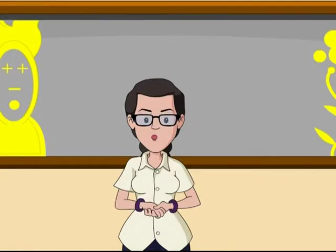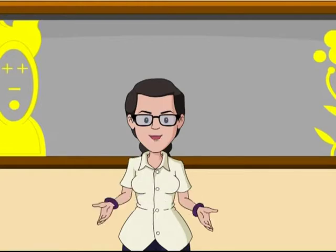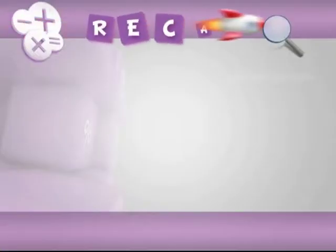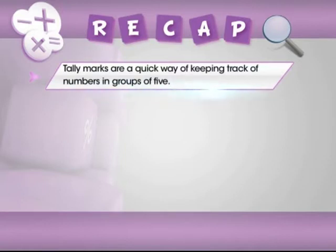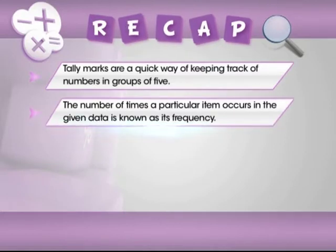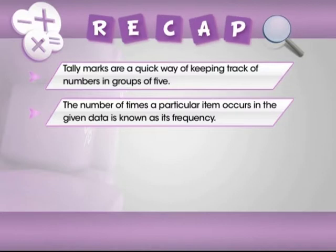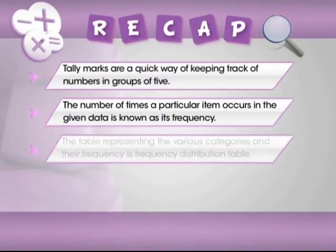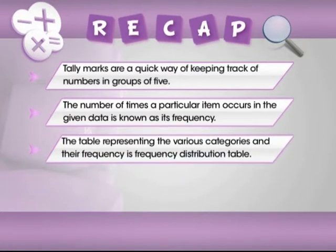Now, let's tally up all the points that summarize our discussion on frequency distribution. In this module, you have learnt: tally marks are a quick way of keeping track of numbers in groups of five. The number of times a particular item occurs in the given data is known as the frequency of that particular item. The table representing the various categories and their frequency is known as the frequency distribution table.